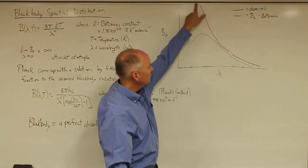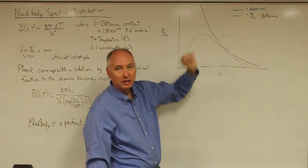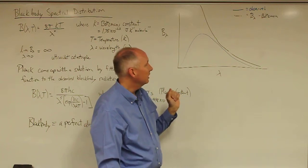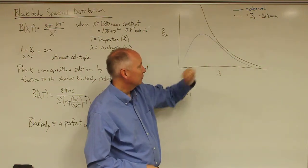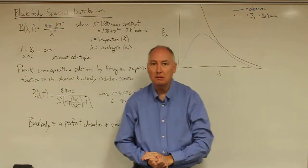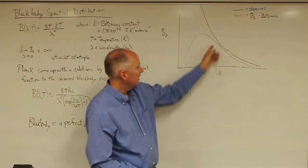Over here, this black line is essentially the formulation of Boltzmann for the blackbody radiation distribution curve, the spectral distribution. It has one problem, though. The problem is that at short wavelengths,